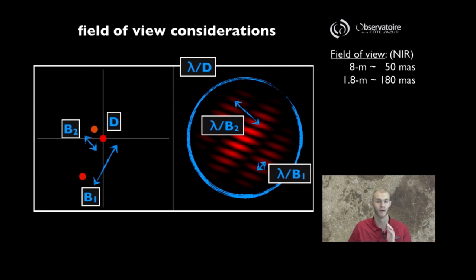Here I've added a third telescope and have highlighted, for instance, the baseline B2, and you can recognize a new set of fringes in my image, characterized by a spacing lambda over B2.